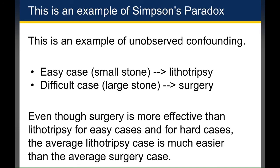The difficulty of the case is actually the confounder here. While it's not directly measured in this data set, the size of the stone is an indicator of how difficult the case is. The adjusted analysis gives you the true answer because you're accounting for something that's affecting the surgeon's decision-making — is this a difficult case, so opt for surgery, or an easy case, so first try lithotripsy? The unadjusted analysis can fool you into thinking that lithotripsy is more effective when in fact the opposite is true.